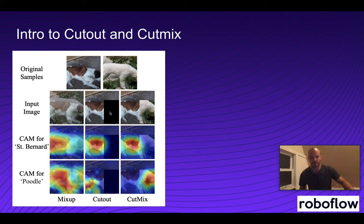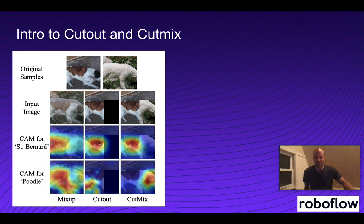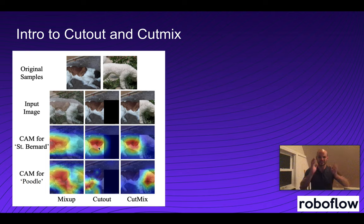For example, in order for a model to identify a St. Bernard, it might rely very heavily on the dog's head. So you might cut out that piece so the model actually starts learning to identify dogs through the back part of the animal. That's one way you might teach your model robustness and the ability to adapt to new environments.